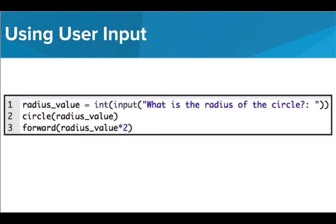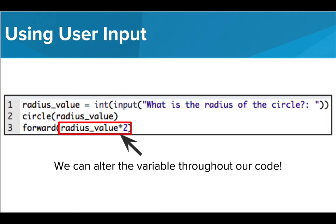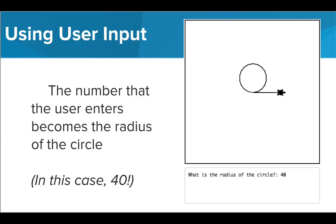In this code, we want the user to tell us what the radius of the circle should be, so we ask the question, what is the circle's radius, and surround it with both the input and int commands. You also may notice that we're changing the value of the user input in the forward command. We can alter user input just as we would a variable's value. The output of our code is a circle with a radius that was specified by the user. Tracy then moves forward the diameter of the circle.